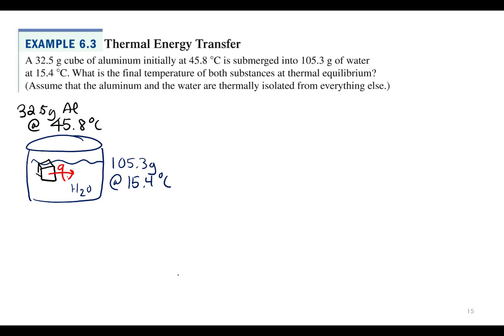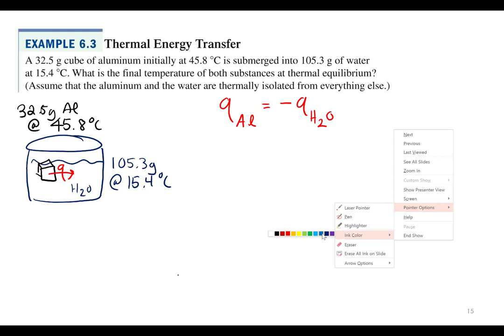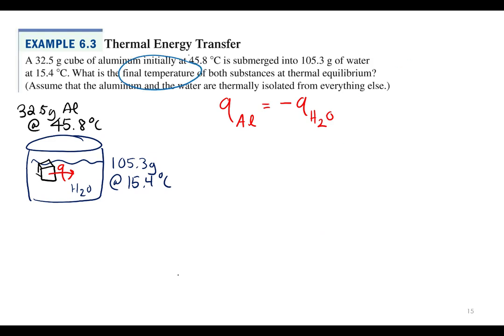Our equation: Q_aluminum equals Q_water, but with opposite signs. The aluminum is losing heat, so it's negative; the water is gaining, so it's positive. The numerical value is the same. We break this equation up and solve for T_sub_f. We know Q equals mc∆T, so Q_aluminum equals mass of aluminum times specific heat of aluminum times ∆T_aluminum, which equals negative mass of water times specific heat of water times ∆T_water.